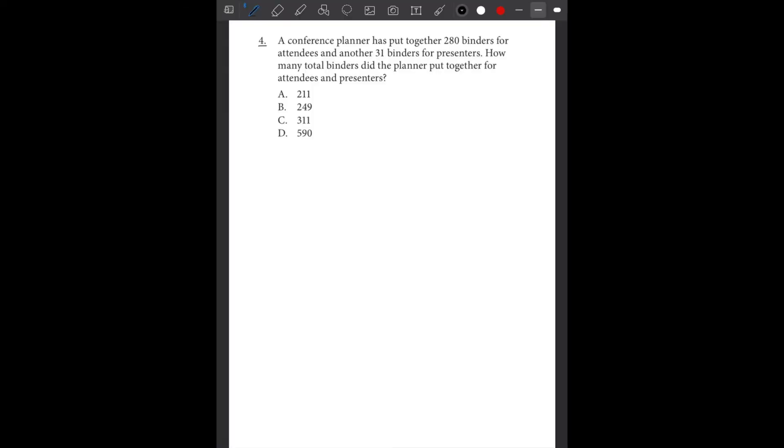Number 4. A conference planner has put together 280 binders for attendees and another 31 binders for presenters. How many total binders did the planner put together for the attendees and the presenters? So if you read this again, you can determine that we would have to be using addition. We're going to be adding the 280 binders for the attendees and we're going to be adding the 31 binders for the presenters.